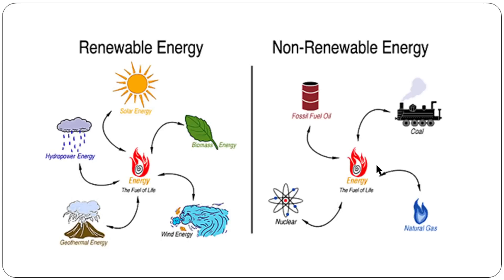The sun is also the ultimate source of hydro energy. The sun produces heat and evaporates water. This water rises into clouds, and when it falls as rain or snow onto mountains, it flows down to the sea, producing flowing water that we use for hydropower energy.